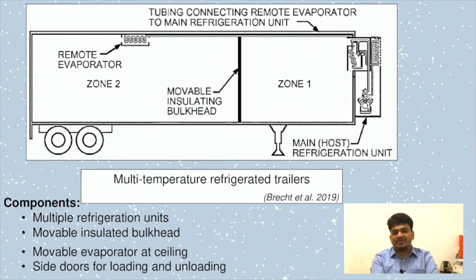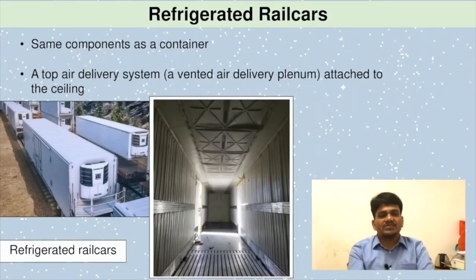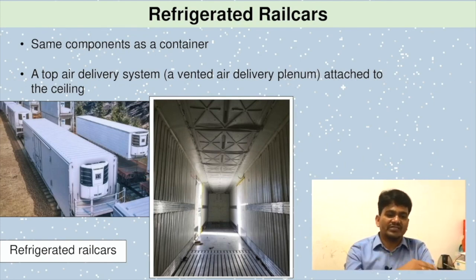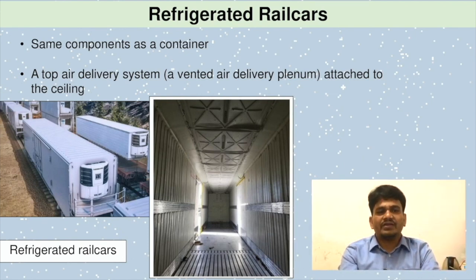Here we can see multi-temperature reefer trailers where different compartments with different temperatures are used for different food products. Components include multiple refrigerated units, movable insulated bulkheads, movable evaporators at the ceiling, and side doors for loading and unloading. Refrigerated rail cars have the same components as a container, with a top air delivery system — a vented air delivery plenum attached to the ceiling.